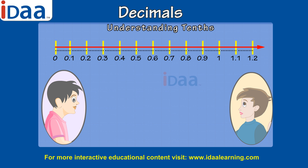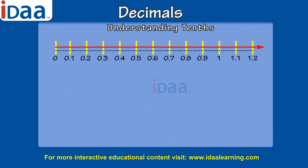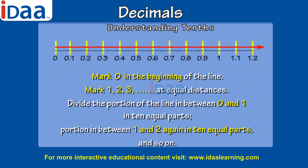Decimals can also be represented on a number line. Mark 0 at the beginning of the line. Mark 1, 2, 3 and so on at equal distances. Divide the portion of the line between 0 and 1 into 10 equal parts, the portion between 1 and 2 again into 10 equal parts, and so on.